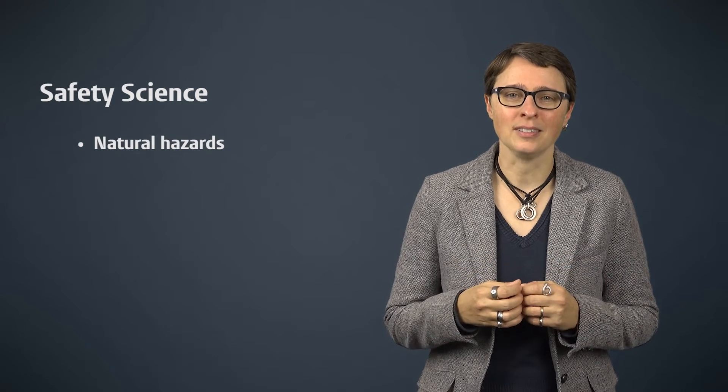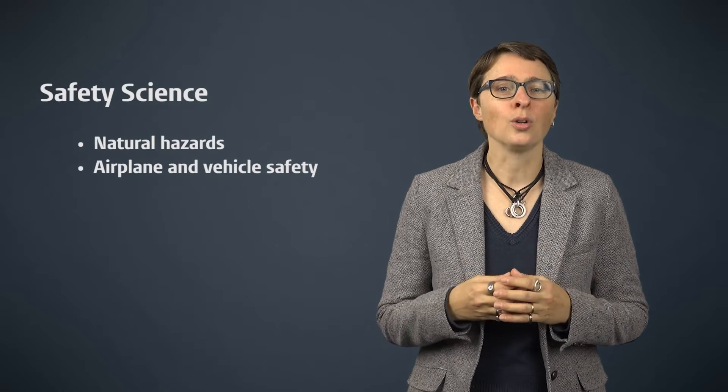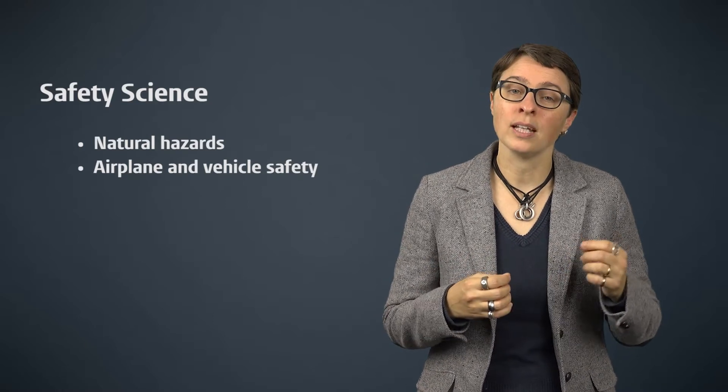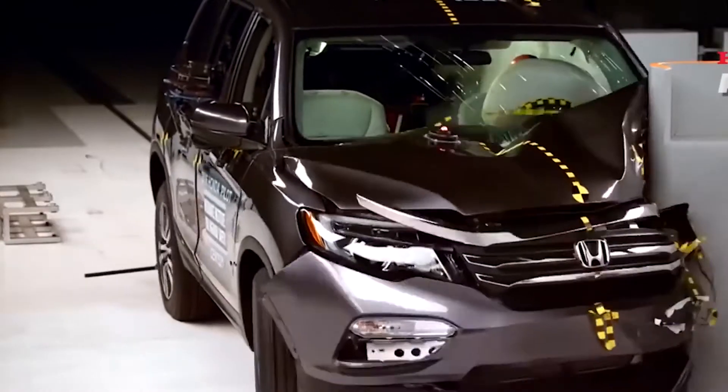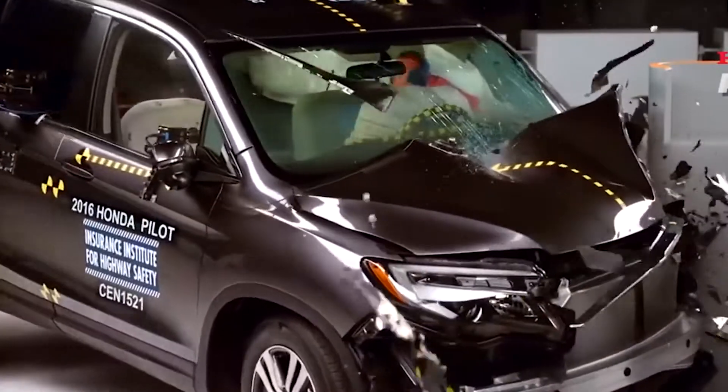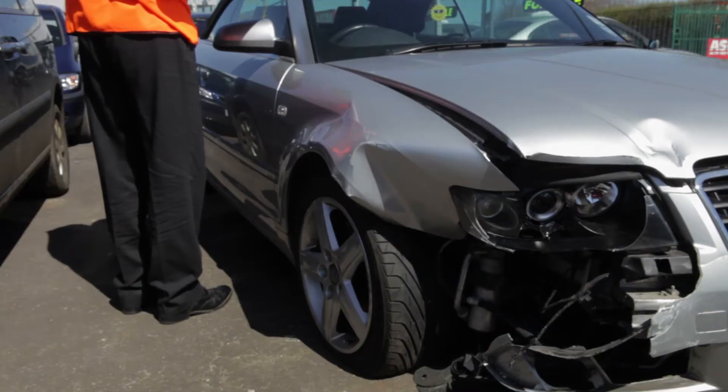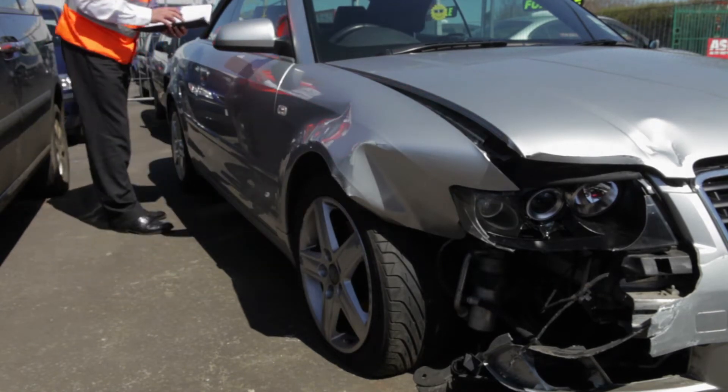A second subdomain of safety science is airplane and vehicle safety. Here, the goal is to understand how to decrease various safety risks related to different forms of transportation. This subdomain of safety science has played a major role in improving the safety of modern-day cars and airplanes, for example, leading to a significant reduction of accidents.